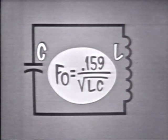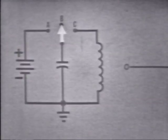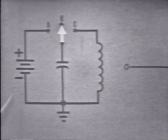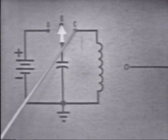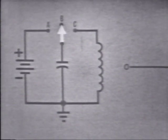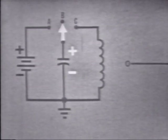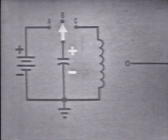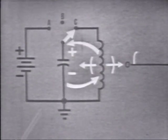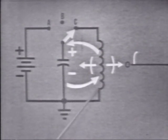Now let's follow the action of this circuit step by step. First, we'll need a power supply to provide the initial energy — in this case a battery. This switch will allow the capacitor to be connected to the battery or to the coil. If we flip the switch to A, the capacitor charges to the battery voltage. Move the switch to B and the capacitor is disconnected from the power supply though it is still fully charged. When the switch is moved to C, the capacitor will start to discharge through the coil, causing current to flow in this direction.